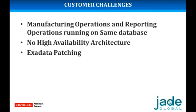Another challenge was the Exadata infrastructure needed patching, but they were not able to do patching because main operations were running 24/7 and they couldn't afford any downtime. They had a high availability infrastructure but it was not as robust — they could offload one of the nodes for maintenance, but performance suffered because the remaining node had a heavy load and couldn't sustain factory operations alone. So high availability existed but was not performance-optimized when one node was removed.